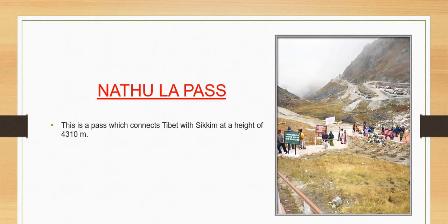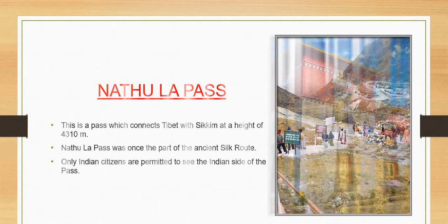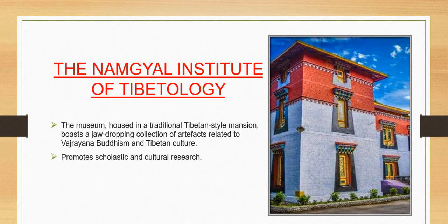One place to visit is Nathula Pass, which connects Tibet with Sikkim at a height of 4,310 meters. Nathula Pass was once part of the ancient Silk Route. Only Indian citizens are permitted to see the Indian side of the pass — this is a rule.